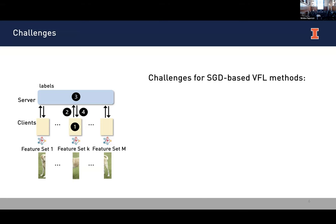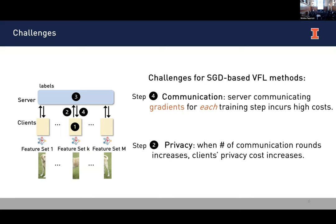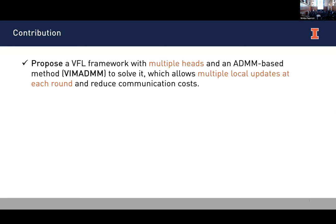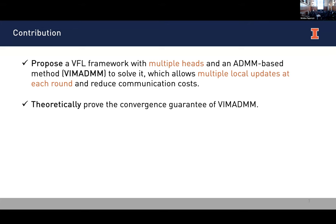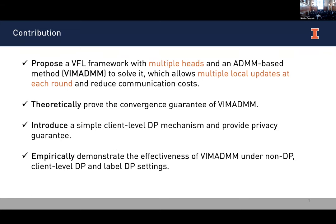The challenge for existing SGD-based VFL methods is very high communication, because the server needs to communicate gradients for each training step, resulting in high communication frequency and cost. The second challenge is privacy: as communication rounds between server and client increase, the client's privacy costs increase because it constantly sends sensitive local embeddings to the server. To address this, we propose a VFL framework with multiple heads as the server's model, enabling an ADMM-based method that allows multiple local updates at each round and reduces overall communication cost. Theoretically, we prove convergence guarantees for VFL-ADMM, introduce a simple client DP mechanism, and provide client-level DP guarantees. Empirically, we demonstrate effectiveness under non-DP, client-level DP, and label DP settings.